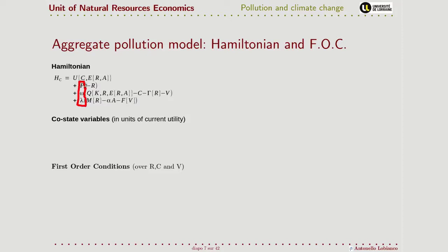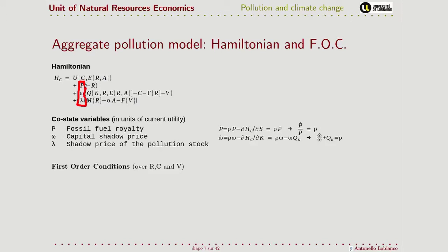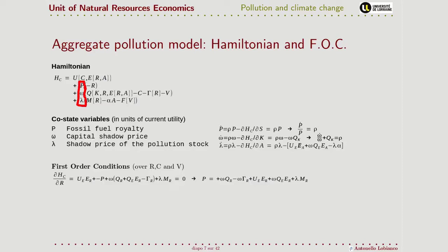These co-state variables each have an equation of motion, which we will interpret in a moment. We can find the optimal solution by finding the maximum of this Hamiltonian with respect to our control variables and co-state variables. In terms of our control variables, we take the first derivative of the Hamiltonian with respect to the extraction of the natural resource.